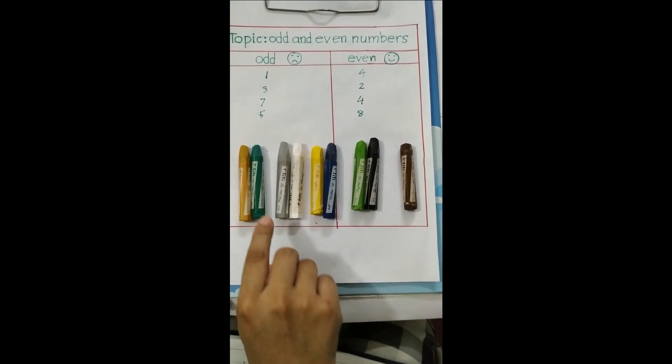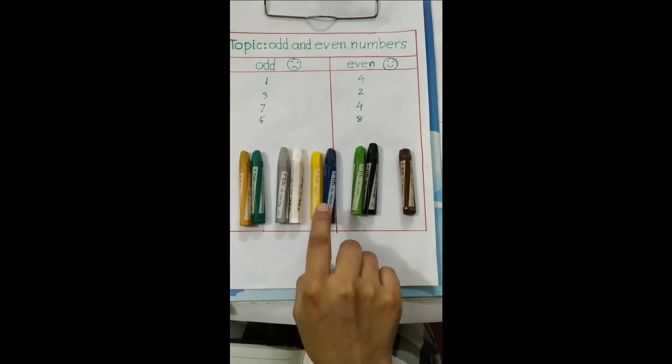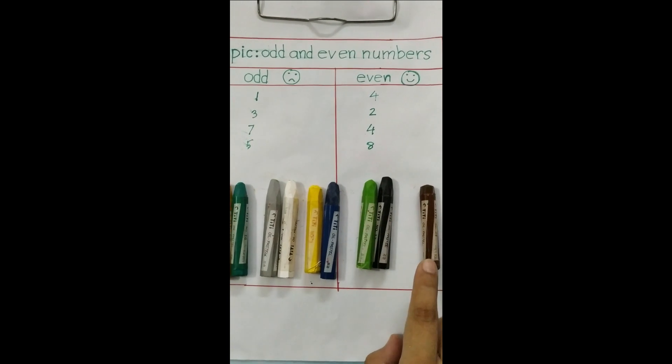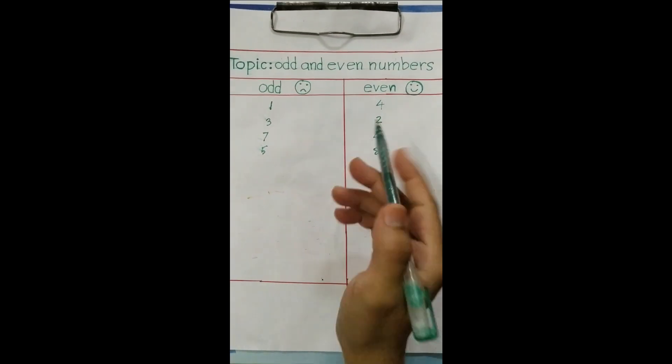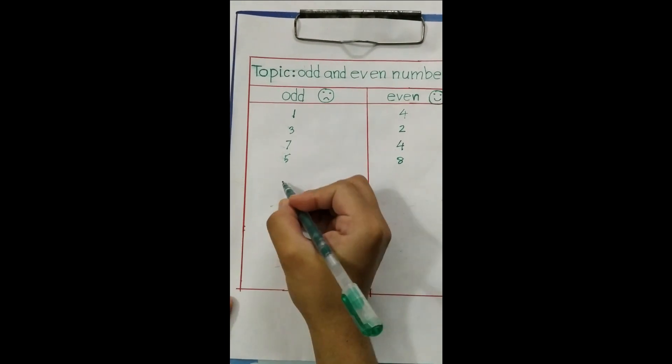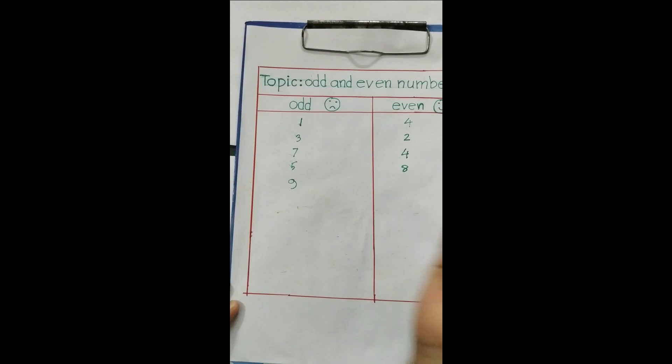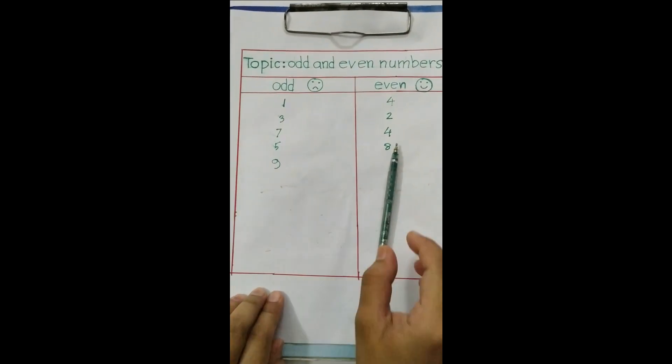One, two, three, four, five, six, seven, eight, nine. That means nine is odd. We will write here nine. Do you understand?